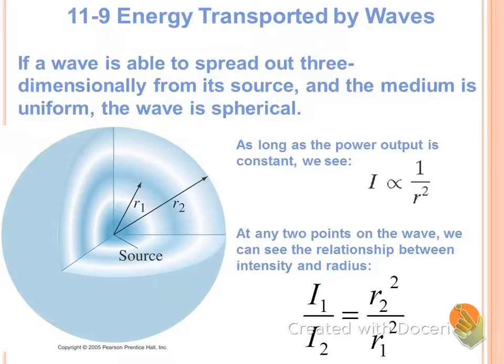So what we're looking at here is this output of power, or intensity, is proportional to one over the radius squared of that wave. So as it gets farther and farther from its origin, we're going to look at the square of that radius. So we're going to be able to connect or compare the intensity of two points on this wave as it goes out.